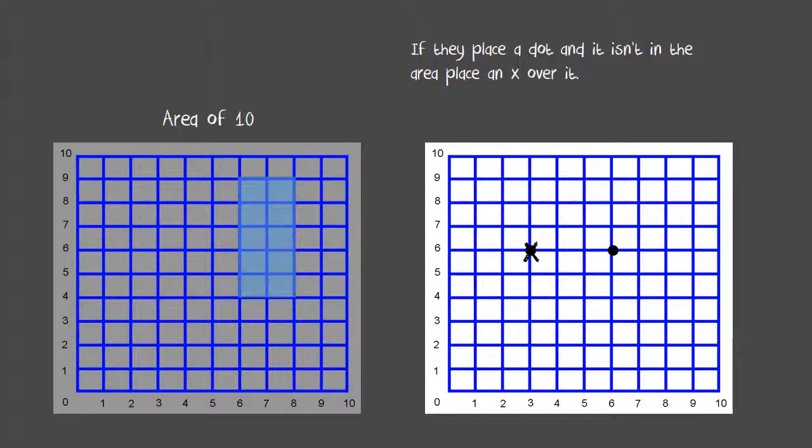The next player can pick a point anywhere and place a dot there. Since this dot falls within the rectangle, they will draw a square around it to show that it's inside the rectangle. Now the player knows somewhat where this rectangle is located and has to figure out the rest of it.